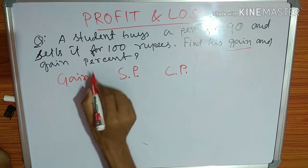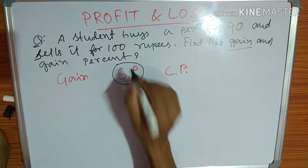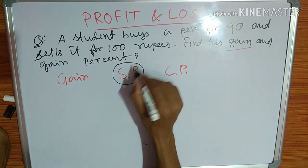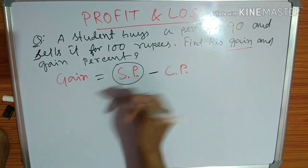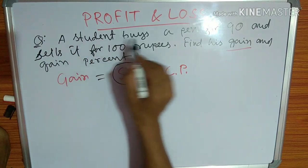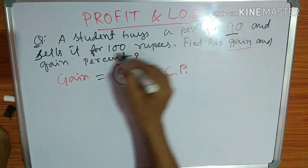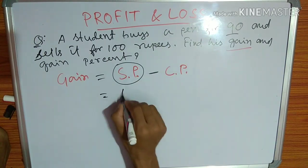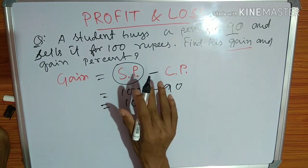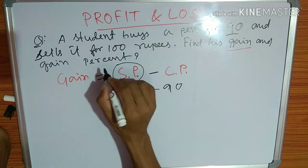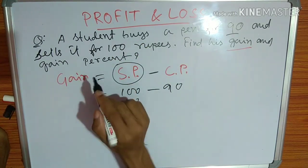Gain means profit. The selling price is related to a gain percentage. The price can be 20% or 50%. It's simple — the highest price determines your profit.